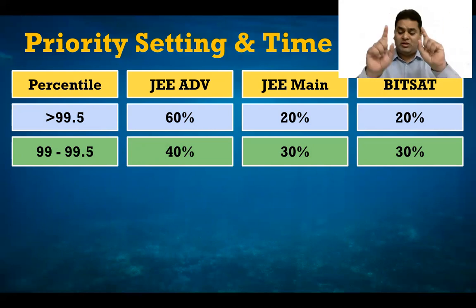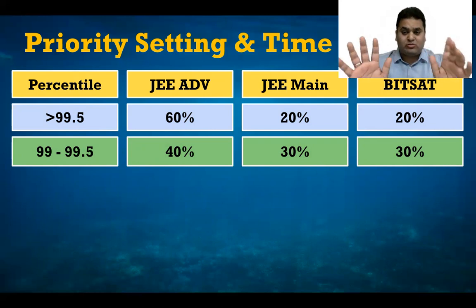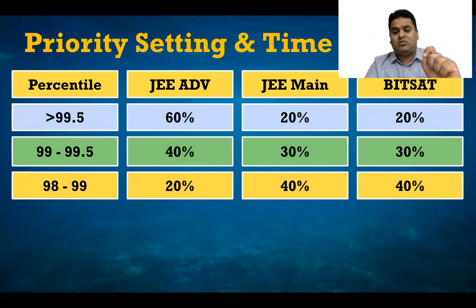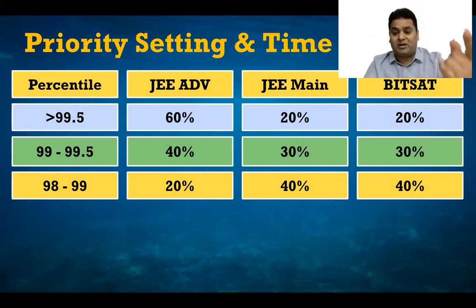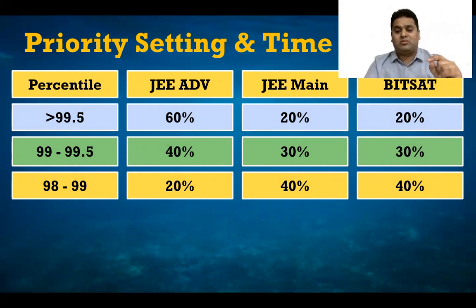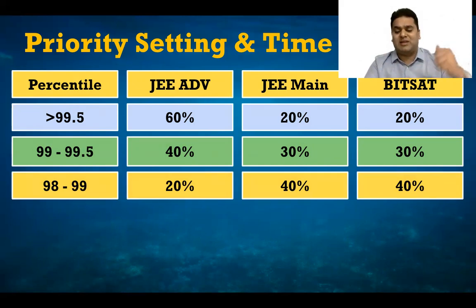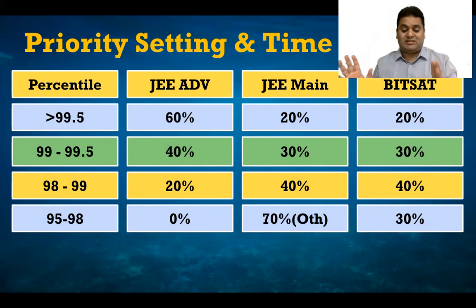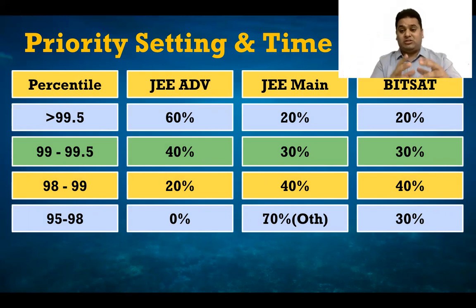This is not something you have to blindly follow — follow what you think is right. It needs to give you confidence. Similarly, at 98 to 99 percentile, there is a slight possibility of a good college but JEE Mains or BITSAT is your best bet. At 95 to 98 percentile, I'm not saying you cannot clear Advanced, but please understand your main focus should be JEE Mains or BITSAT. It's a decent branch for JEE Mains.